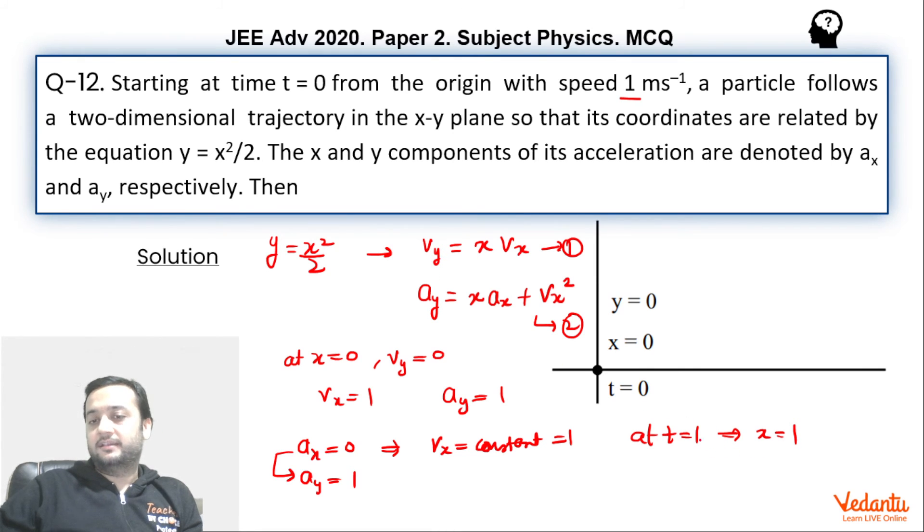So we can say that vy has become 1 into 1 because x is also 1 and vx is also 1. So we can say vy has become 1 meter per second. So at t equals to 1, vy is also 1 and vx is also 1.